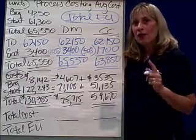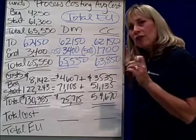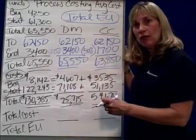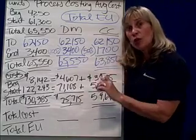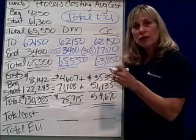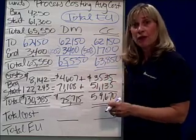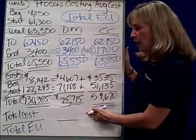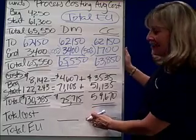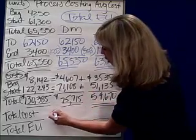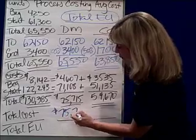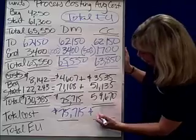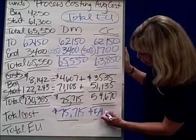Step four — now this is important. We're going to find the total cost for the total equivalent units. Remember, under FIFO it was the current cost for the current equivalent units. So this is the big difference: total cost, total effort. To do that, the numerator is total cost. All I have to do is look up. The total cost for materials is $75,715. The total cost for conversion is $54,670.